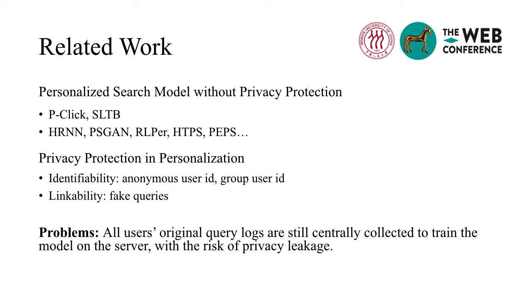Some solutions for privacy protection in search mainly consider the identifiability and linkability of privacy. They adopt anonymous user ID or group user ID to mask user identities. Others hide the user's real search intent through adding some fake queries. Though the effects of privacy protection have been achieved, they still expose the user's behaviors to the server and collect the logs to train a personalization model on the server.